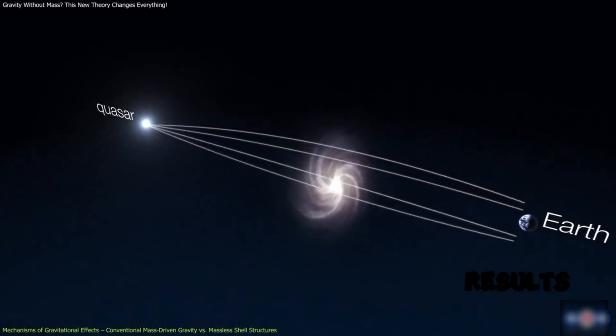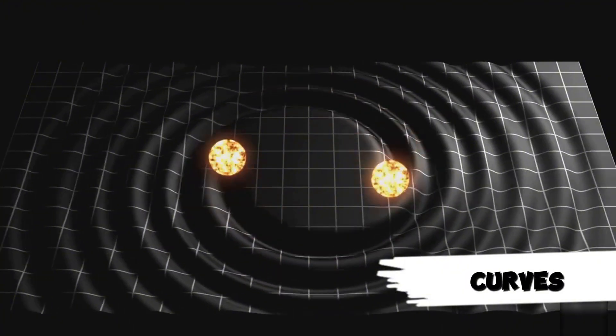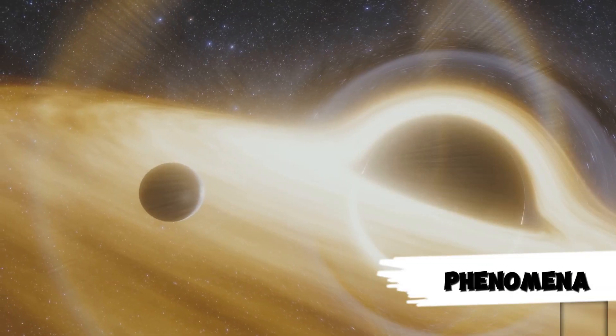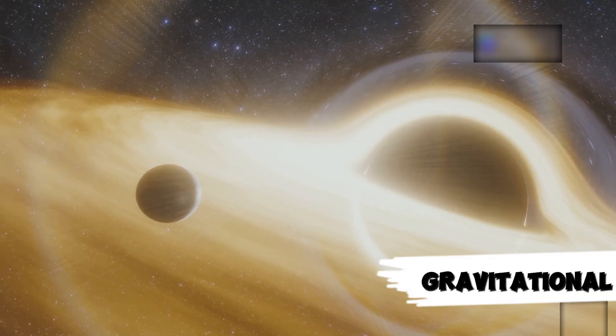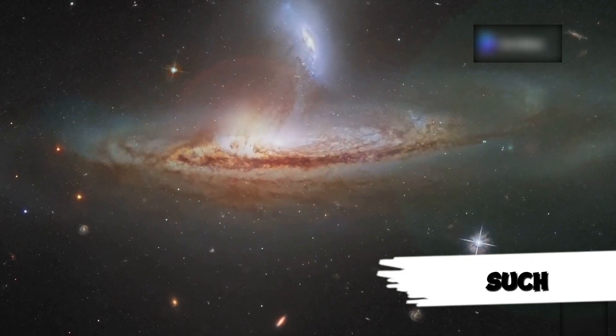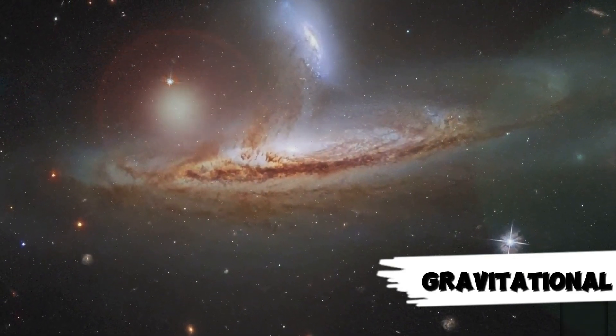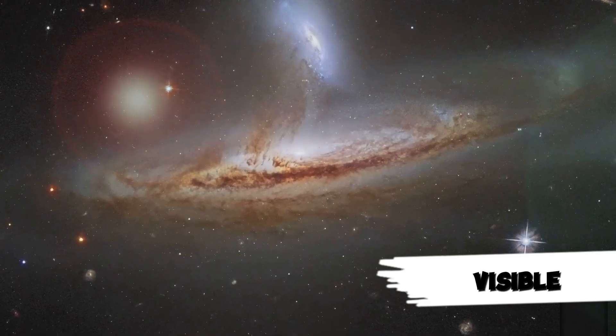In conventional physics, gravity results from mass warping space-time, guiding objects along these curves. This model explains phenomena like planetary orbits and gravitational lensing, where light bends around massive objects. But observations such as the flat rotation curves of galaxies point to additional gravitational forces unaccounted for by visible mass.